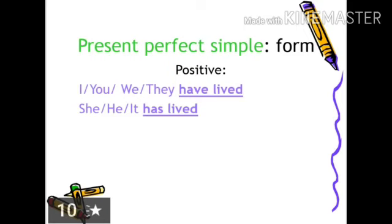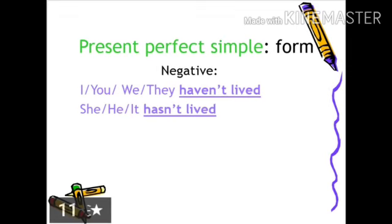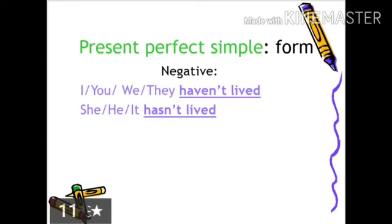Forms of present perfect tense — positive, negative, interrogative. Structure of positive sentence: subject plus have/has plus past participle form of the verb. For example: I/you/we/they have lived; he/she/it has lived. Negative form structure: subject plus haven't/hasn't plus past participle form of the verb. For example: I/you/we/they haven't lived; he/she/it hasn't lived.